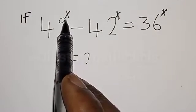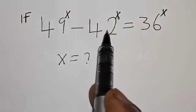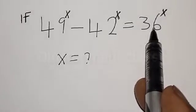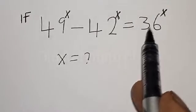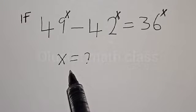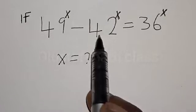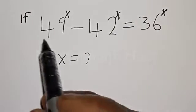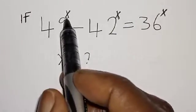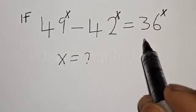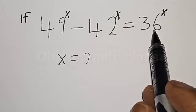If 49 raised to power s minus 42 raised to power s is equal to 36 raised to power s, what is the value of s? Hi everyone, welcome to my class. In today's class, we want to find the value of s from this given exponential equation: 49 raised to power s minus 42 raised to power s is equal to 36 raised to power s.